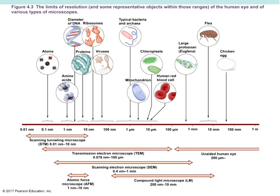Notice that the compound microscope — the one we use in lab primarily — only has a certain range that it's able to see. Things as large as a flea at 10 micrometers, and things as small as typical bacteria at about half a micrometer. To see anything smaller than that, you'll need a scanning electron microscope, a transmission electron microscope, or a scanning tunneling microscope.